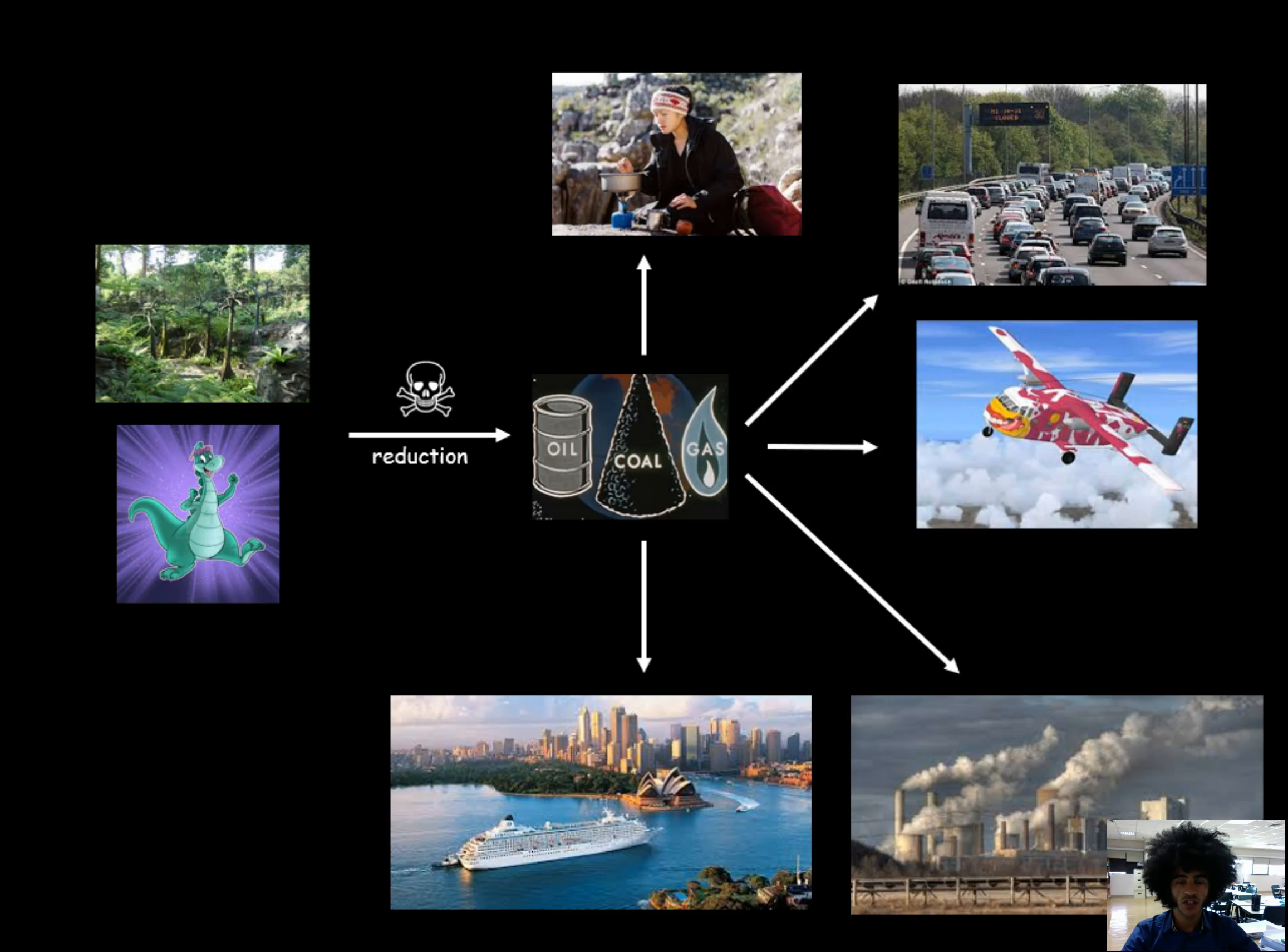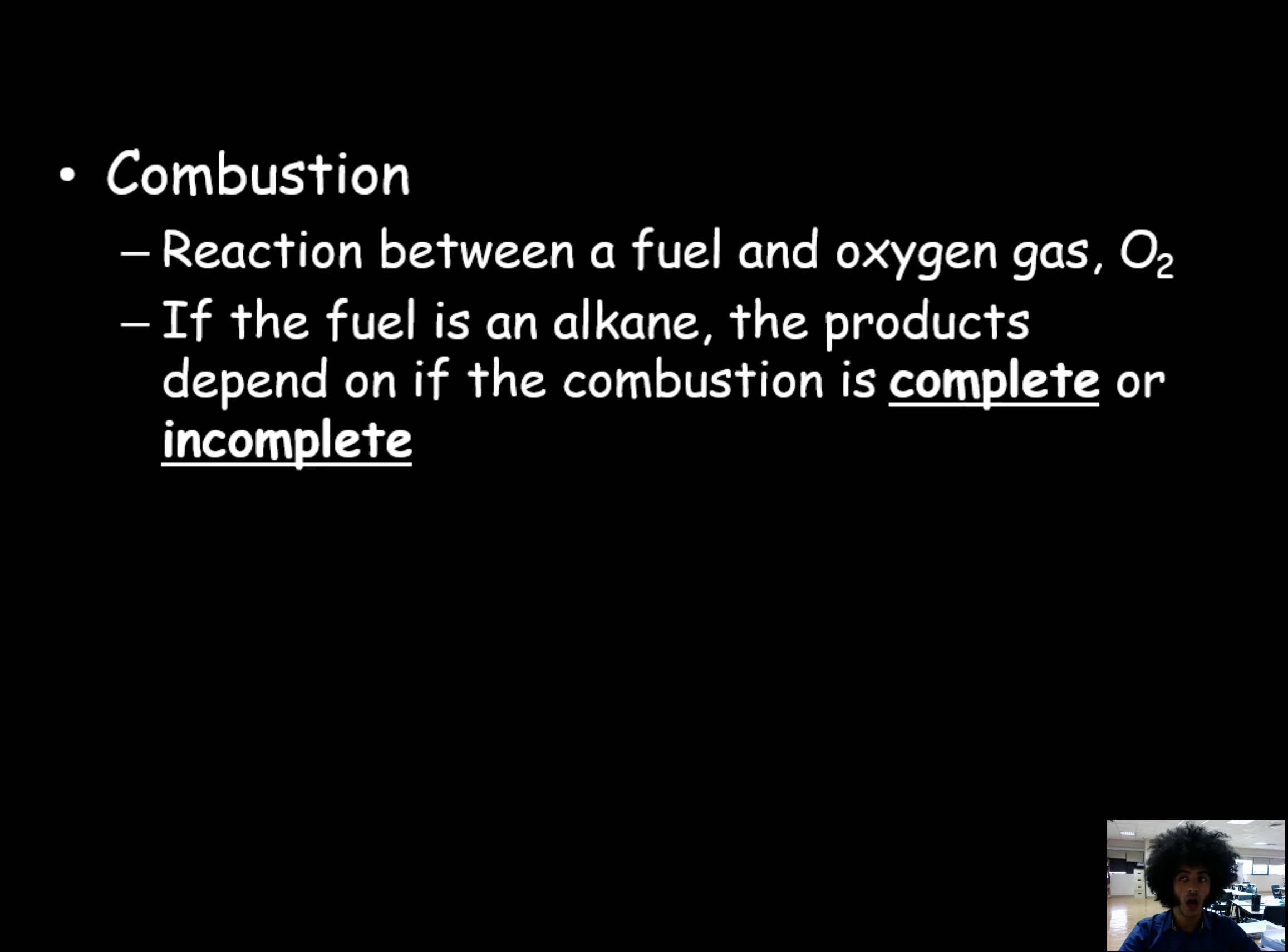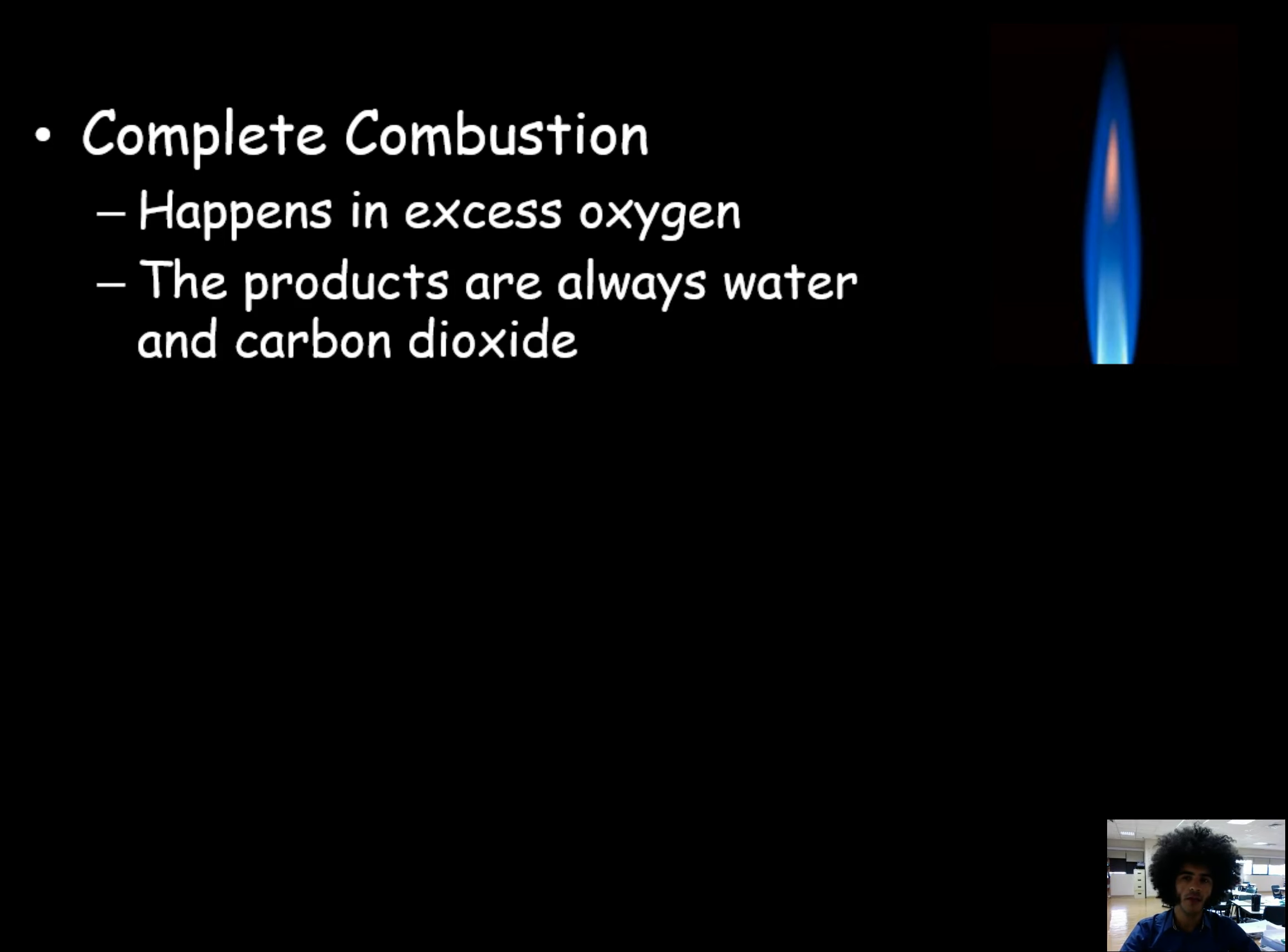So how do we balance these kind of equations? Well in terms of combustion there are two types of combustion you have to be aware of. They both involve the same reactants so you need a fuel and you need oxygen gas in the form of O2. The fuel in this case is a hydrocarbon and we're focusing on alkanes today, so if you have an alkane it's either going to be complete or incomplete combustion. We'll start with complete combustion first. Now complete combustion happens in excess oxygen. The products that you get are always water and carbon dioxide.